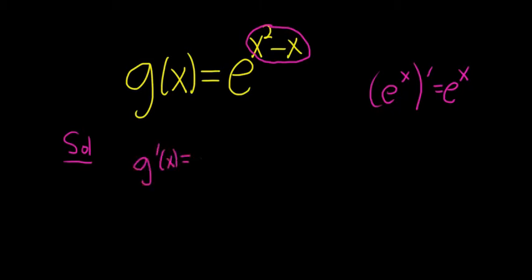So it's going to be e to the x squared minus x. And this is the inside function right here, so you leave it alone. So you take the derivative of the outside, which is e to the x, evaluate it at the inside. Then you multiply by the derivative of the inside. So the derivative of x squared is 2x, and then the derivative of x is 1.